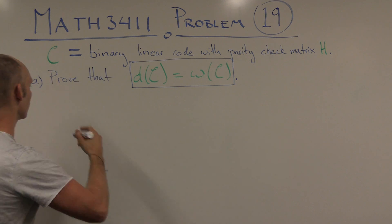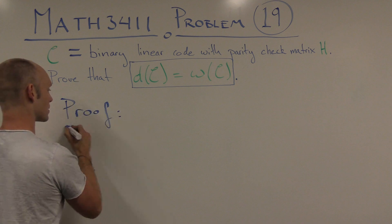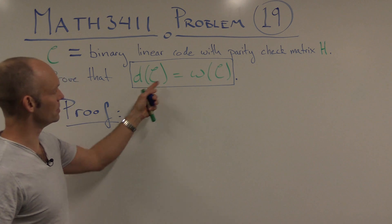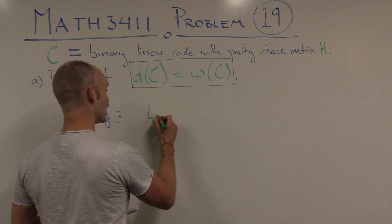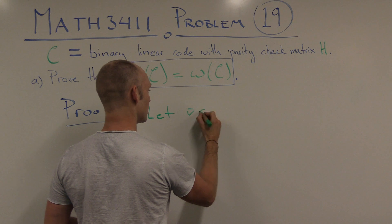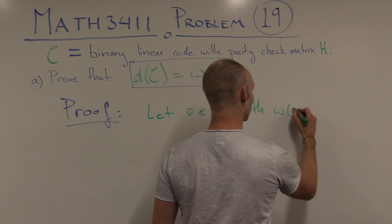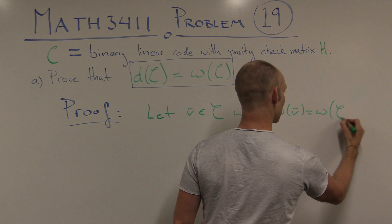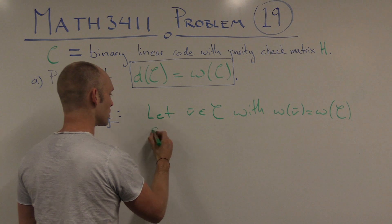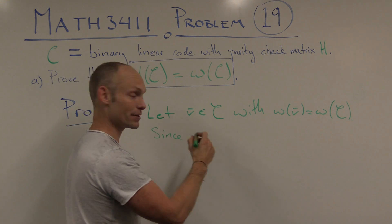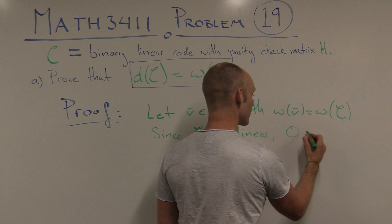Now, how do we prove this? We have to show that these two quantities are identical, so let's show that one is smaller than or equal to the other, and the other is smaller than or equal to the first. If we have a vector V in C with weight equal to the minimal weight, and since C is linear, we know that the zero vector is in the code.